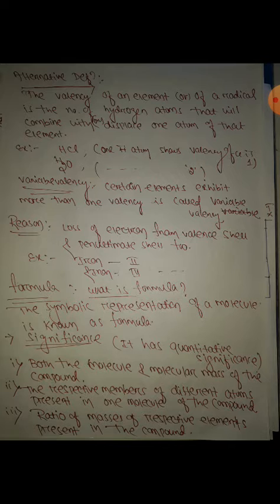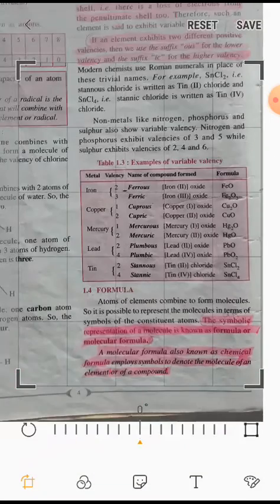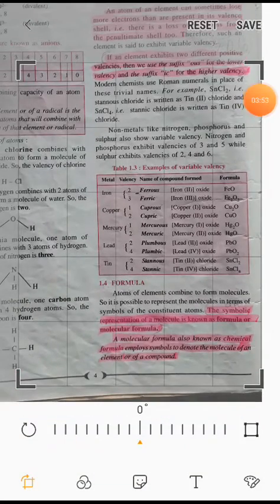Variable valency: certain elements exhibit two valencies, called variable valency. Here is the example table. Iron has valency two and three—two means ferrous and three means ferric. Copper has valency one and two, called cuprous and cupric. Similarly, mercury one and two, mercurous and mercuric. Lead two is plumbous and four means plumbic. Tin two and four are stannous and stannic. These are examples on page number four.